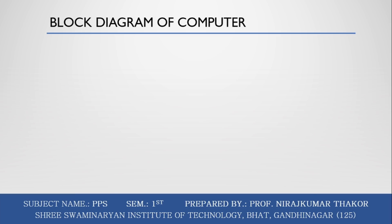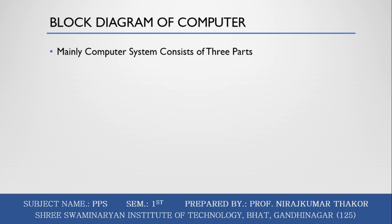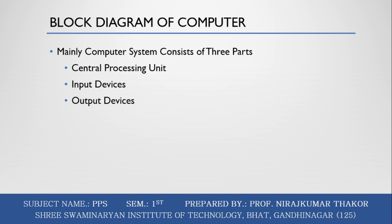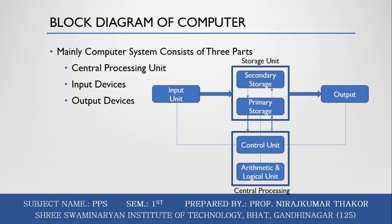Now the block diagram of the computer. A computer system mainly consists of three parts: the Central Processing Unit, the input device, and the output device. The CPU is divided into two parts: the arithmetic unit and the control unit. A set of instructions is in the form of raw data. A large amount of data is stored in computer memory with the help of primary and secondary storage devices.